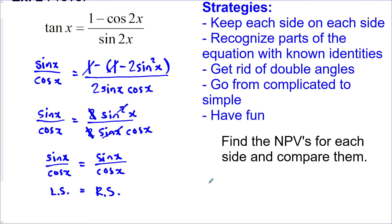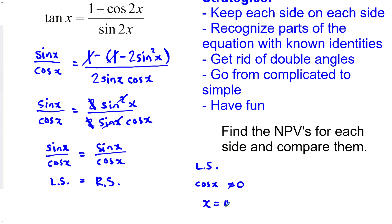Let's find the non-permissible values for each side. For this side, cos is in the denominator, so cos cannot equal zero. Cos equals zero on the y-axis, so that would be when we have an angle of π/2 + πn where n is an integer. On the right side, we have both sine and cos in the denominator. That means all our quadrantal angles, all the angles where it's on the x-axis and the y-axis. So cos x cannot equal zero, sin x cannot equal zero. This would be x cannot equal π/2·n where n is an integer.